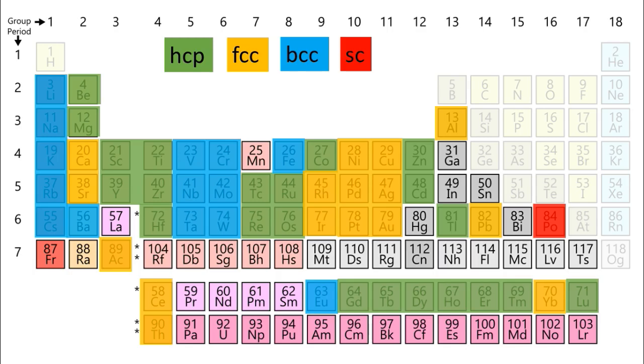If we label the crystal structure of metallic elements in the periodic table, we will see that most of them have HCP, FCC, or BCC structure, and the only one with simple cubic lattice is polonium, labeled red here.